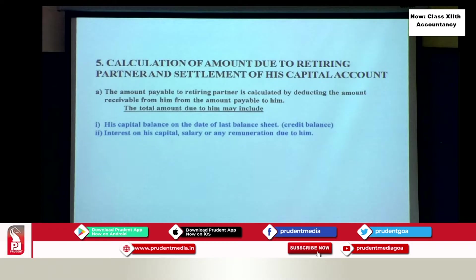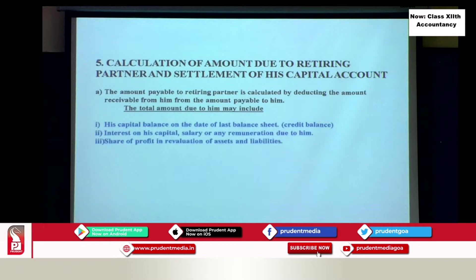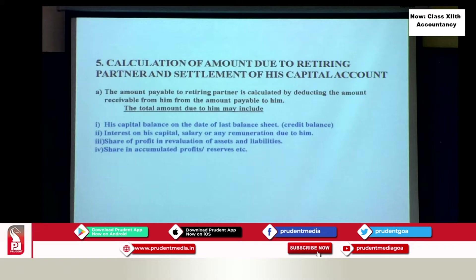Then any interest, salary, or remunerations — these will arise only when he retires in the middle of the year. We have to calculate his share from the last balance sheet till the date of retirement and credit it to his capital account. Then we have his revaluation profit share — the retiring partner is credited with his share in the revaluation profit. Then his accumulated profits, reserves, reserve fund, or general reserves — his share is to be found out and credited to his capital account.